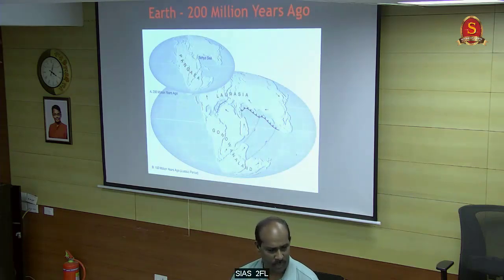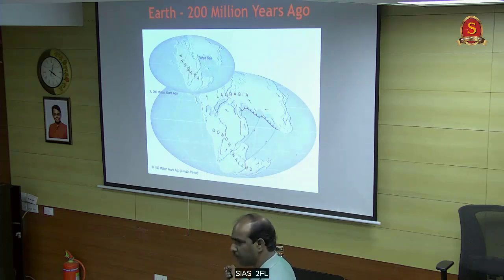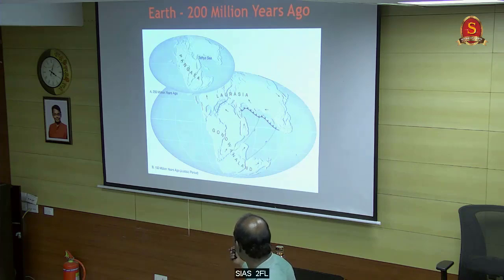This is the continental drift theory. Generally, people say that once upon a time there was a single rock, a single plate, and after that it was divided into two: Laurasia and Gondwana Land.